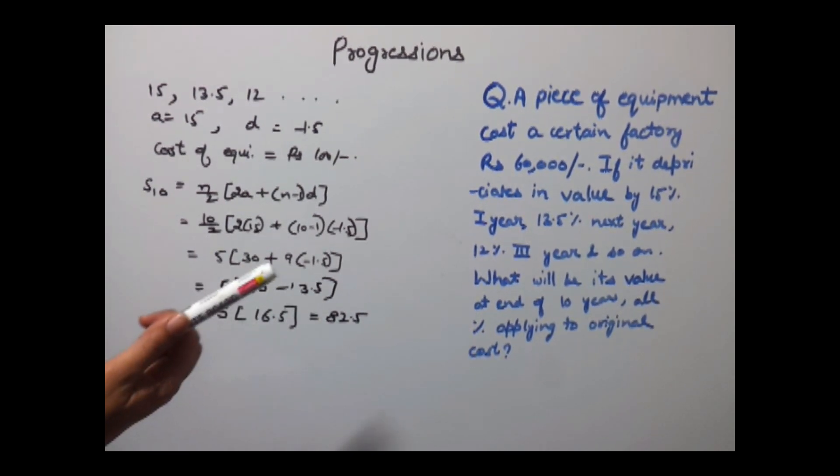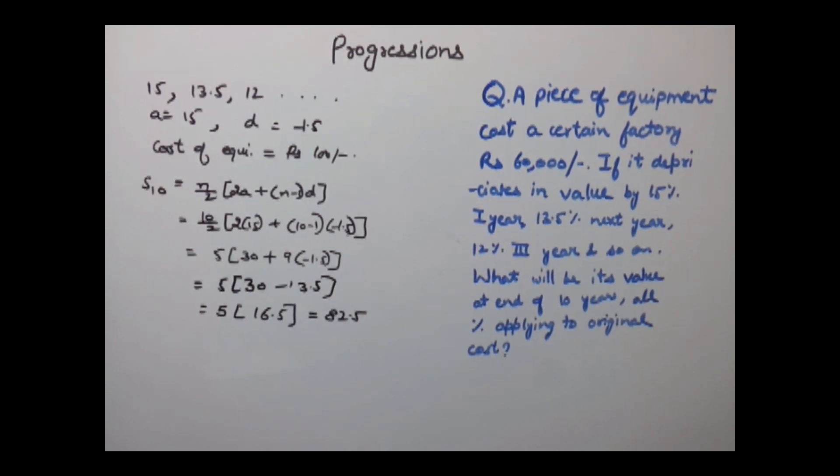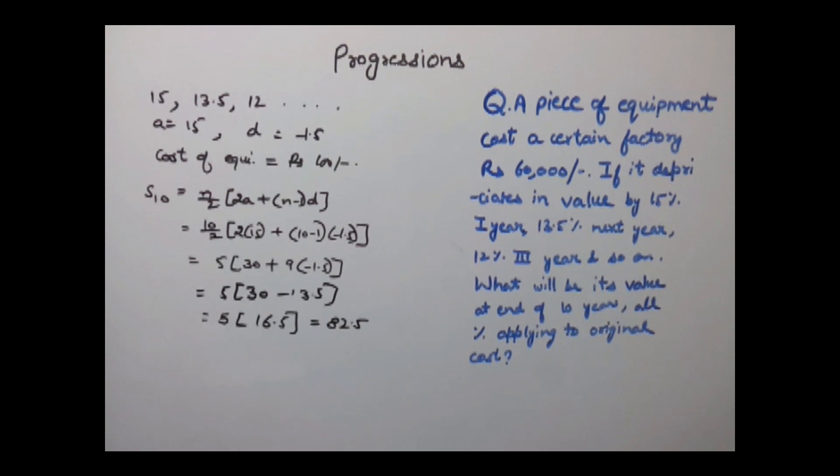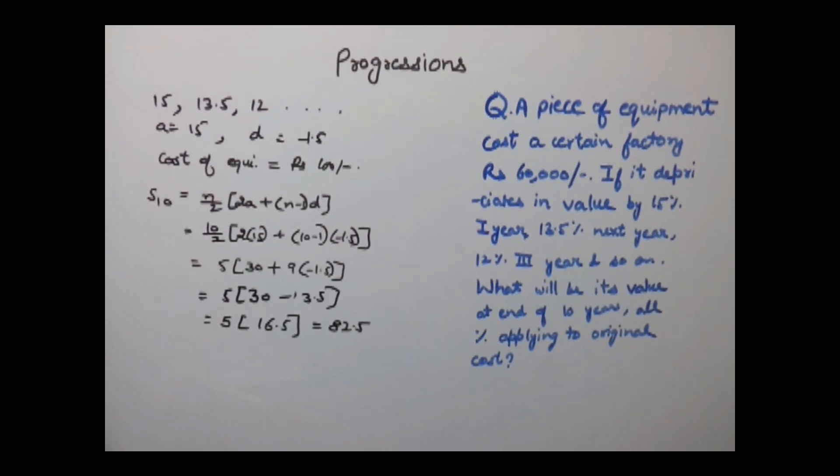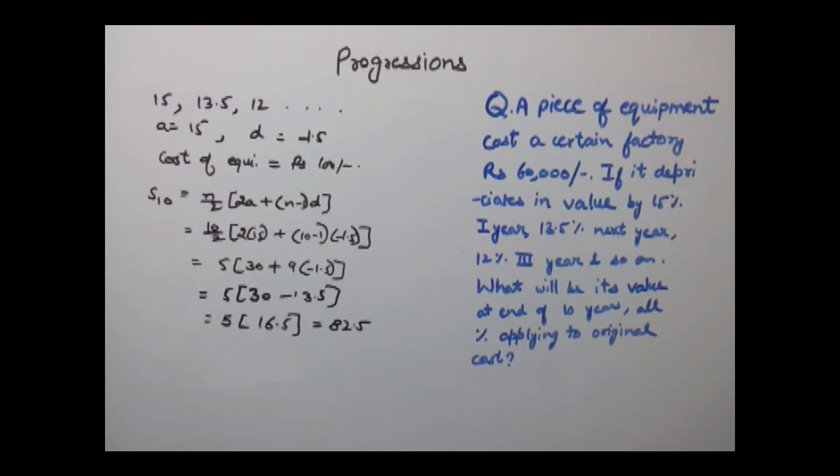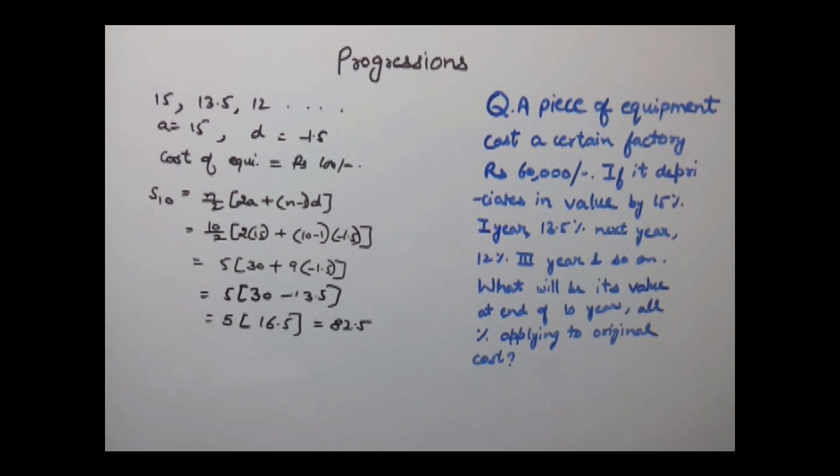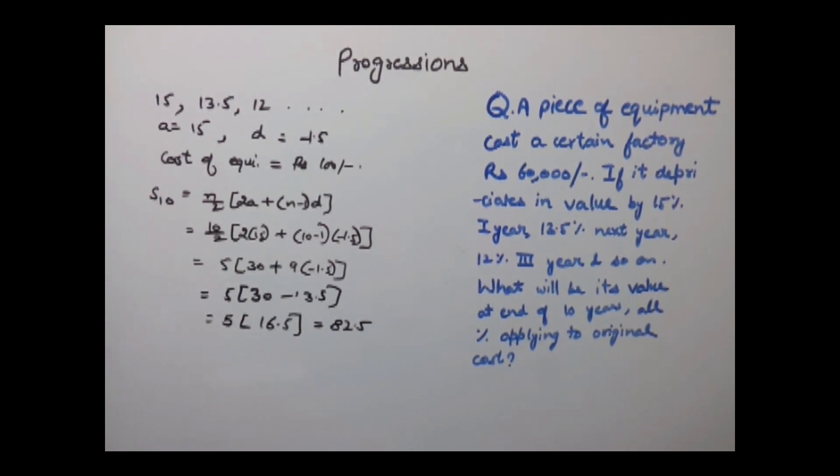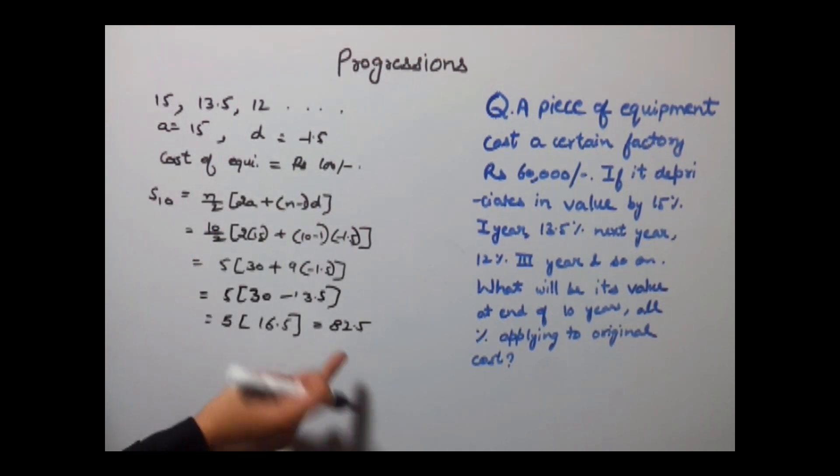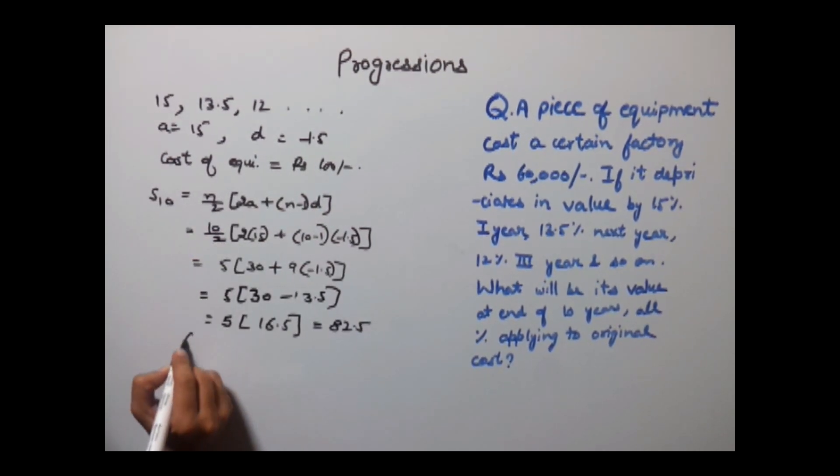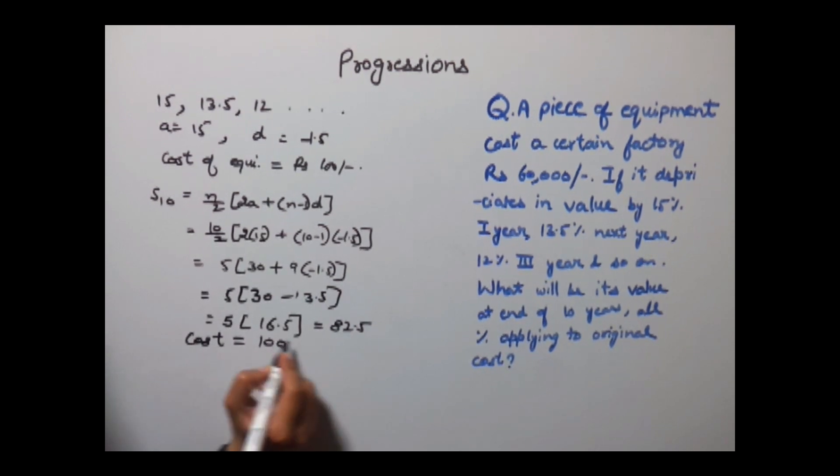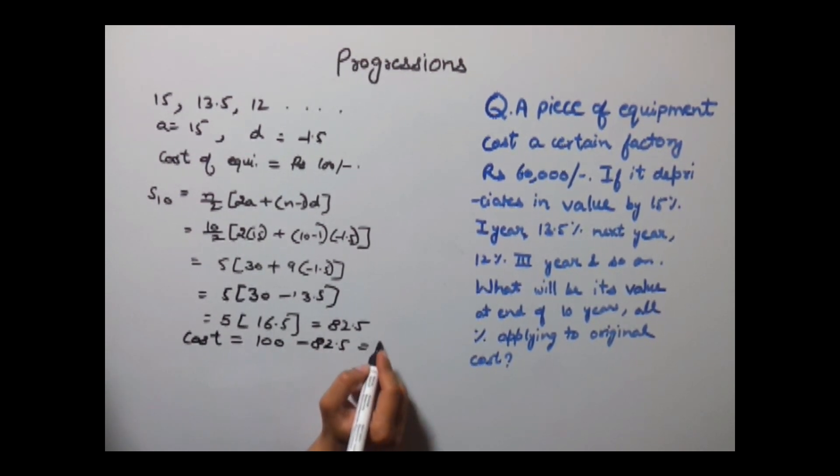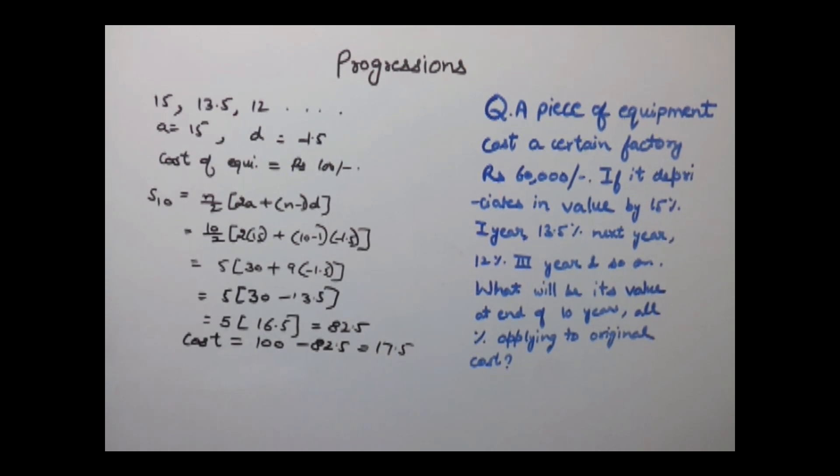A piece of equipment costs 60,000. If it depreciates by 15% first year, 13.5% next year, 12% in the third year and so on, what will be its value at the end of 10 years? So now this is the depreciation cost. The actual cost will be 100 minus 82.5, which equals 17.5.